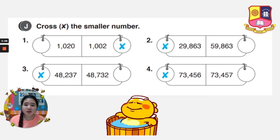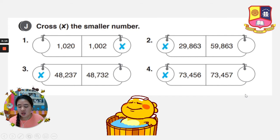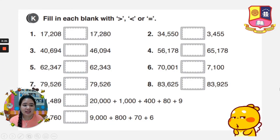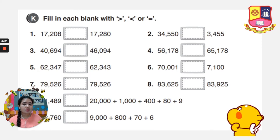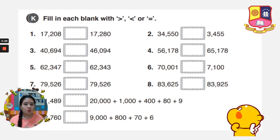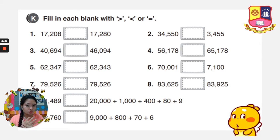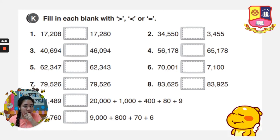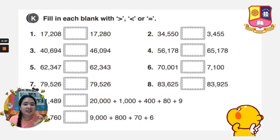Next exercise. We go to letter K. In letter K, we have to fill in each blank with the greater than, the less than, and the equal sign. We have to use these three symbols.